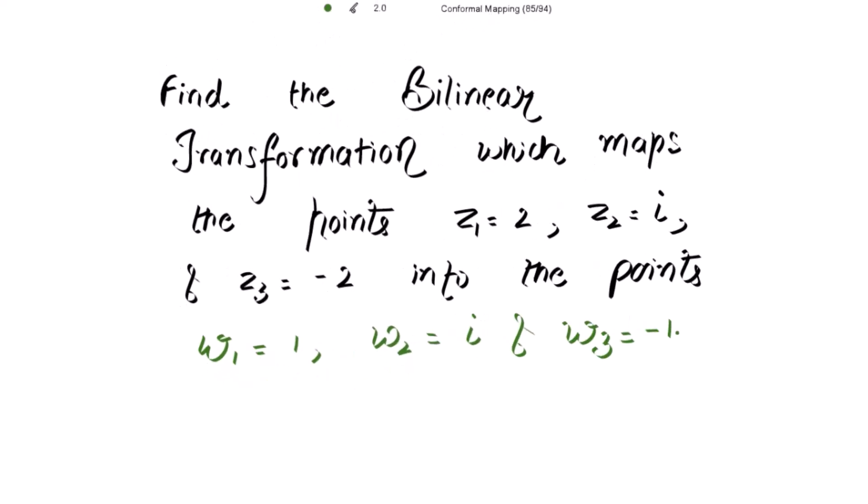Find the bilinear transformation which maps the points z1 equal to 2, z2 equal to iota and z3 equal to negative 2 into the points w1 equal to 1, w2 equal to iota and w3 equal to negative 1.